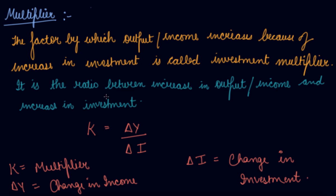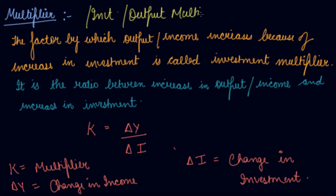I hope you understood what the multiplier is and how you calculate it. When talking about the multiplier, we are talking about the investment multiplier or output multiplier — these are the same thing, because investment increases your output, and your output increases your income. So investment multiplier, output multiplier, and income multiplier all refer to the same concept.